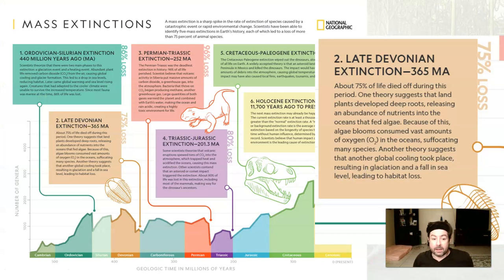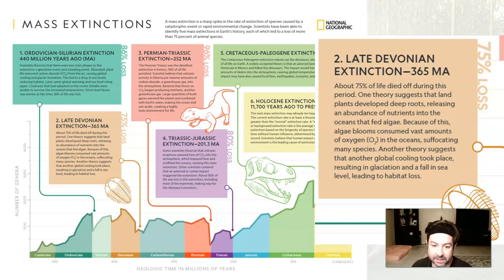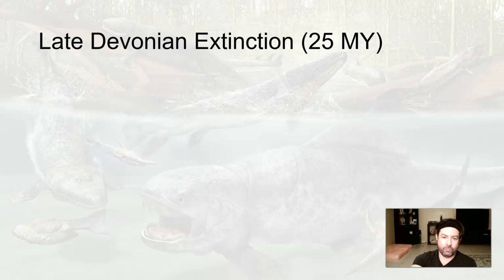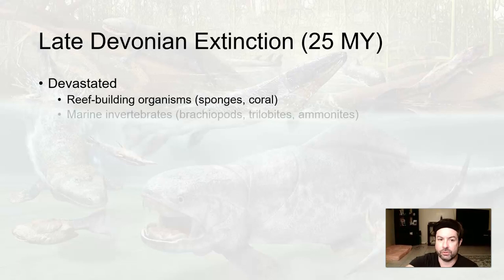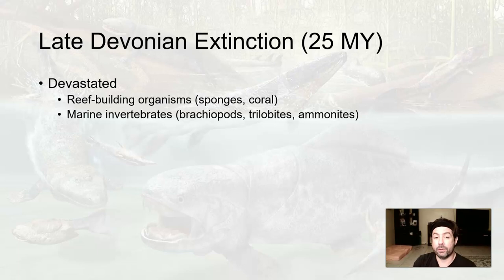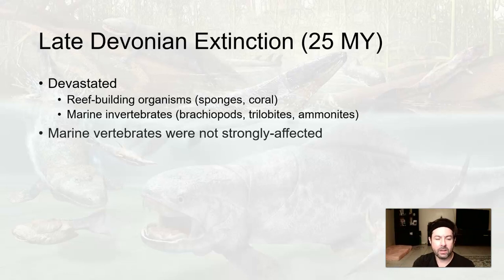Towards the latter part of the Devonian — not at the very end, but in the late Devonian — there was another extinction where 75% of all life went extinct. This extinction occurred over about a 25 million year period. It really devastated reef-building organisms — sponges, corals, and other marine invertebrates like trilobites, brachiopods, and ammonites. Marine vertebrates like fish were not strongly affected; it was mostly soft-bodied organisms and shelled creatures.